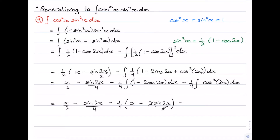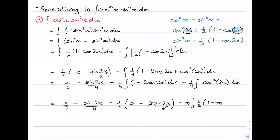Now we need to integrate cos squared 2x, and we know how to deal with that. In a very similar way to sine squared, cos squared uses the double angle formula except with a plus: cos squared x equals one half (1 plus cos 2x). The key is that the angle inside the cosine must be twice the angle being squared. So cos squared 2x becomes one half (1 plus cos 4x). This exact integral was done in the previous video, so you can go back and watch that if needed.